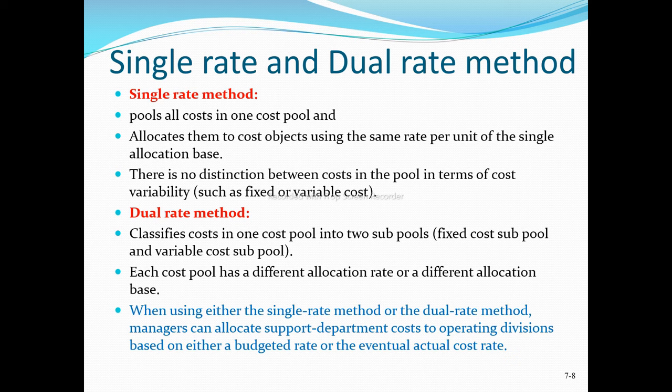Under the single rate method, all costs — whether variable, fixed, or others — are allocated using one single rate. A single rate is determined for the cost pool by combining indirect costs, and the total cost is allocated using that one rate per unit of the allocation base. There is no distinction between variable and fixed costs in the pool.